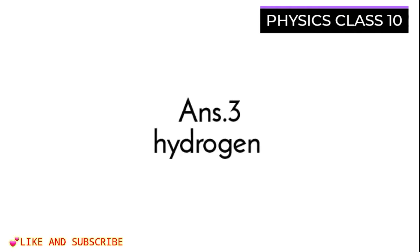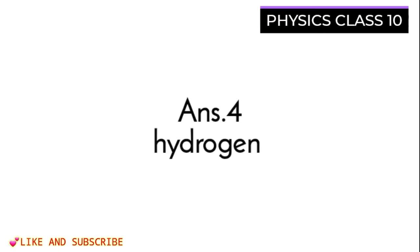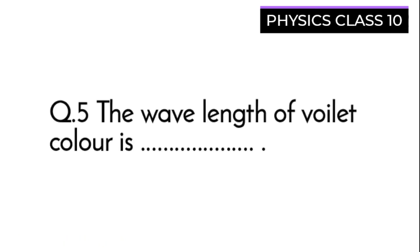Question four: The source of the Sun's energy is the nucleus of dash and its answer is hydrogen, its nucleus. Now question five: The wavelength of violet color is dash. You have to fill the blank.